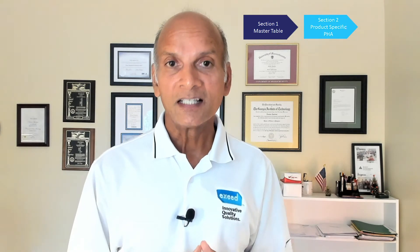These are probably legacy products or new products that you plan to develop based on those legacy products — you don't have to start from scratch. The second section is what I call a product-specific PHA. This is where you will specifically identify the planned risk controls for each one of those line items in your master table.